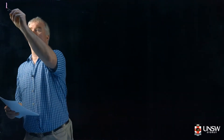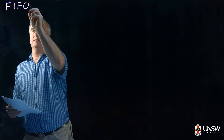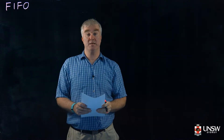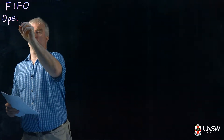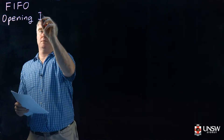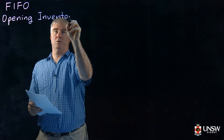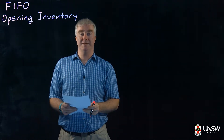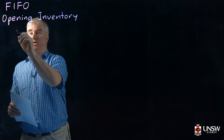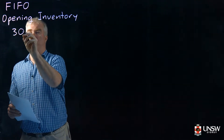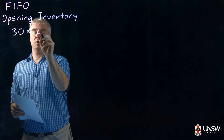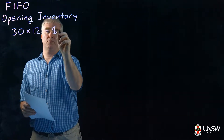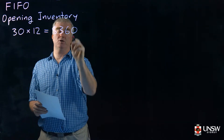First we'll solve the problem using FIFO. To start with we need to know the value of the opening inventory. We said that we had 30 tins that cost $12 each, so it's quite simple: 30 times 12 equals $360 worth of paint.